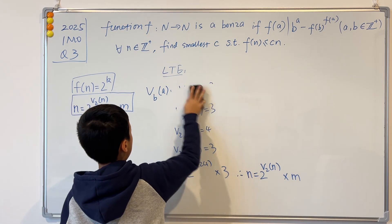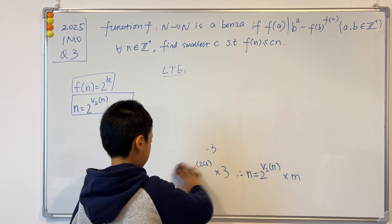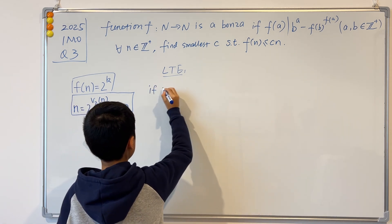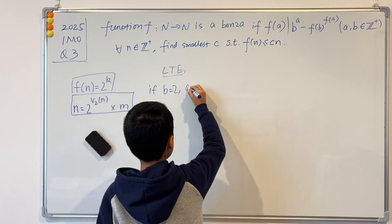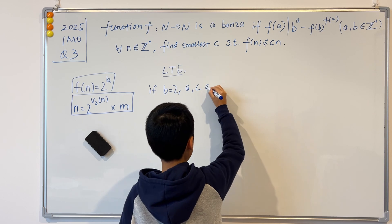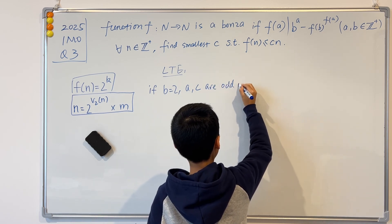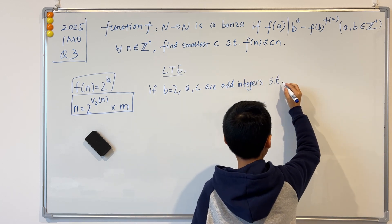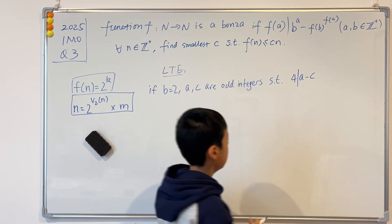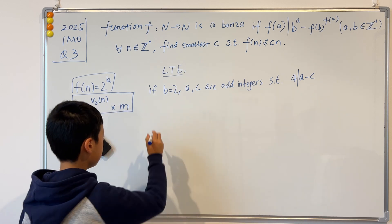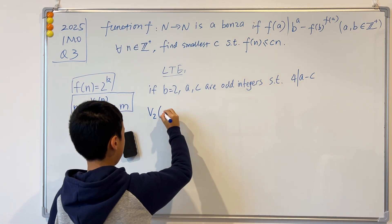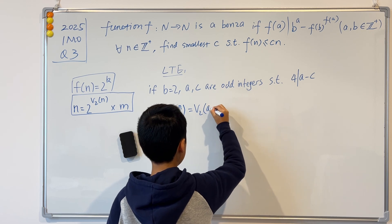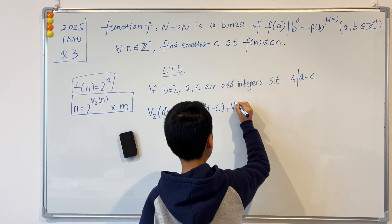Now the actual LTE lemma we'll use: if b = 2 and a and c are odd integers such that 4 divides (a − c), then v_2(a^n − c^n) = v_2(a − c) + v_2(n).